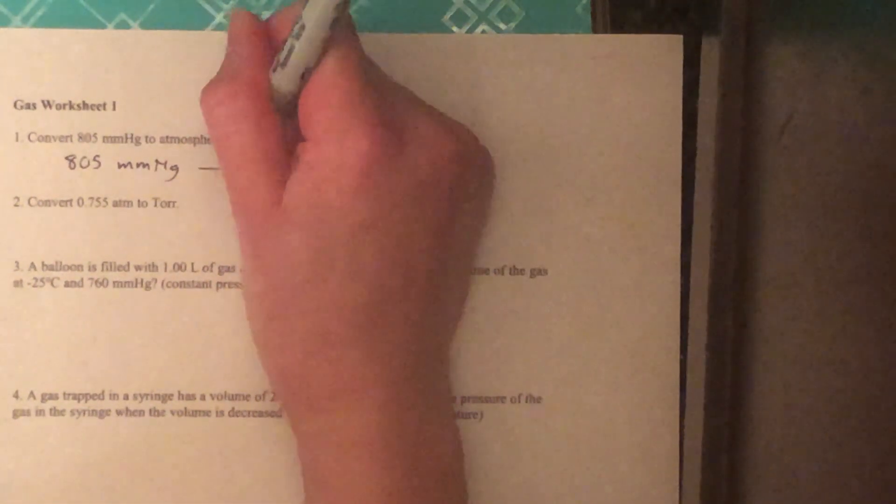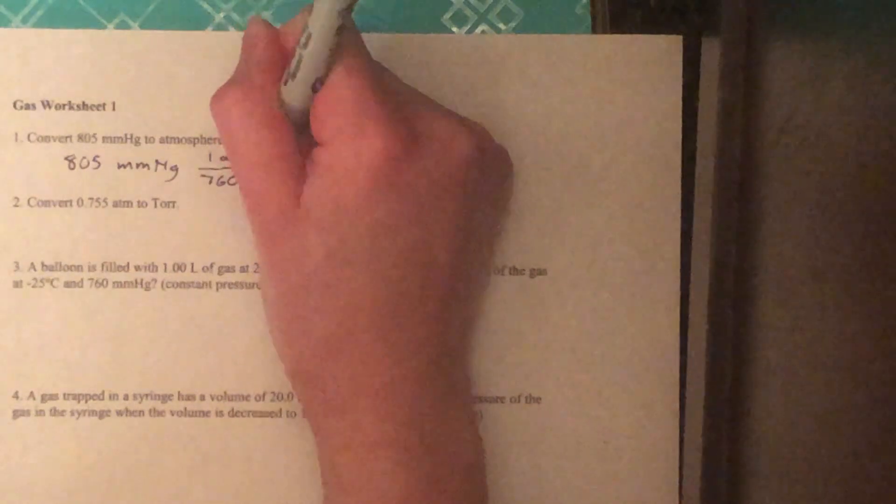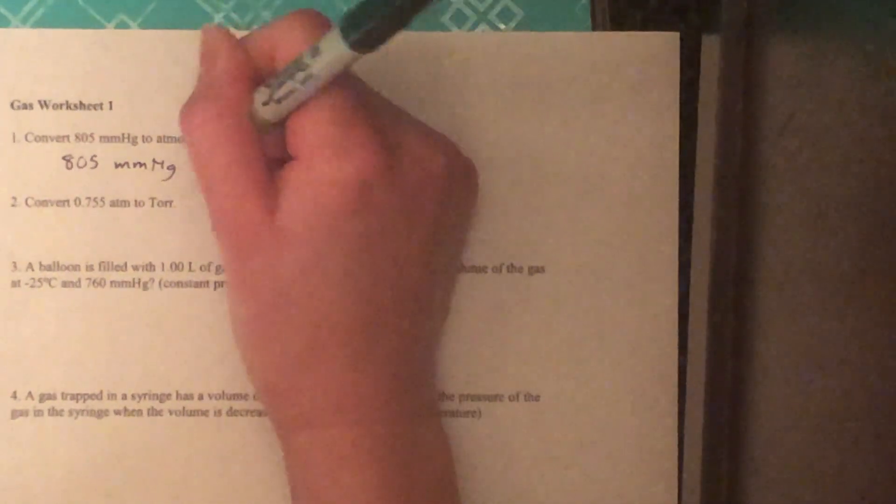So we'll set up that proportion. We have one atmosphere at the top, 760 millimeters mercury on the bottom.